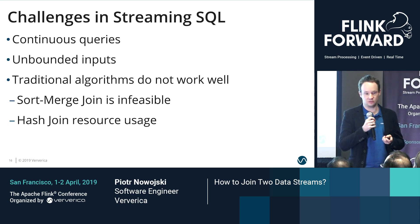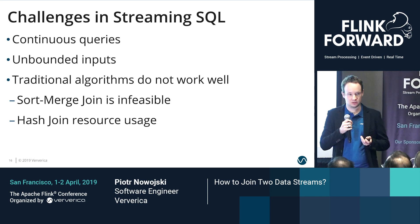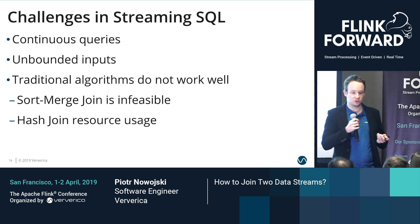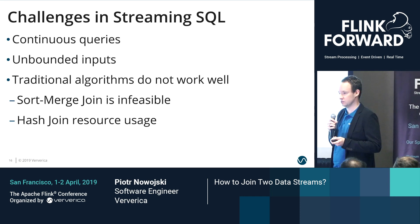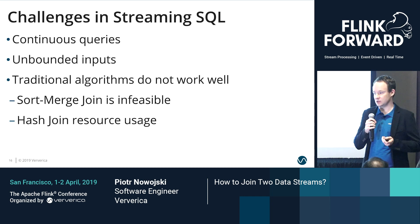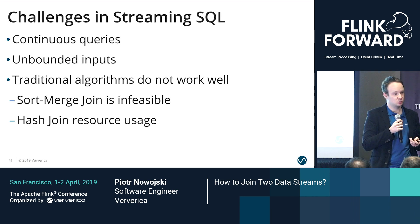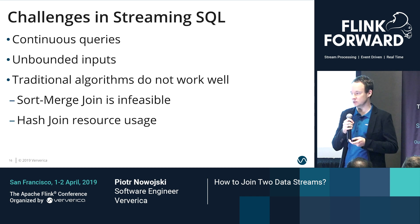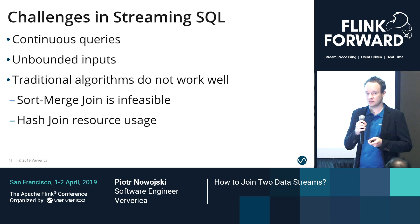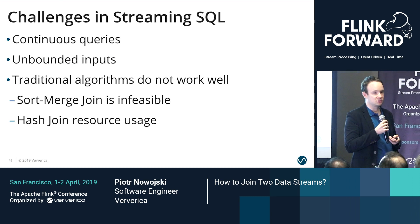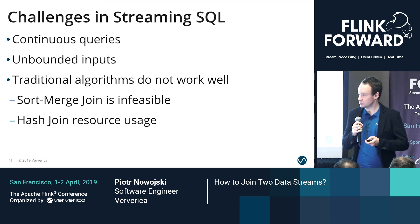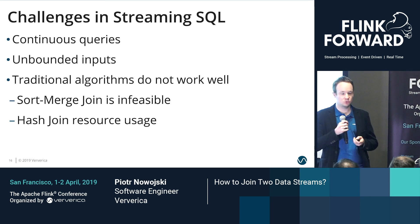Because of this, traditional approaches do not work very well in a streaming environment. Sort merge join is infeasible since the first phase requires gathering all of the data and sorting the tables — if inputs are unbounded, we cannot sort them. In hash join, we can actually adapt this algorithm to make it work in streaming. However, the problem is resource usage: since records are coming from either side of the join at the same time, we have to keep two hash maps, one for each side of the join — increasing our resource usage. And since our queries work on unbounded inputs, memory consumption can grow indefinitely over time.